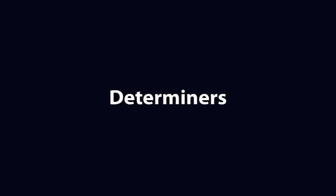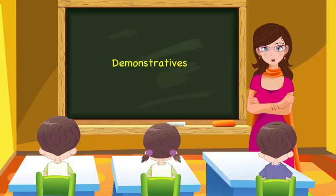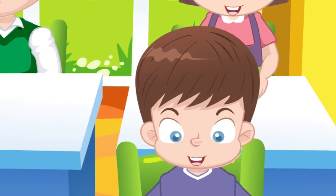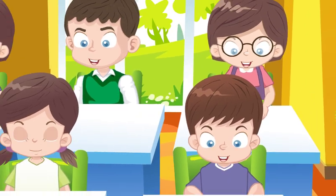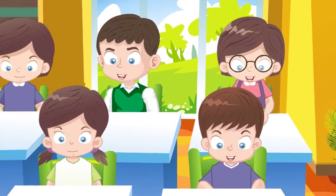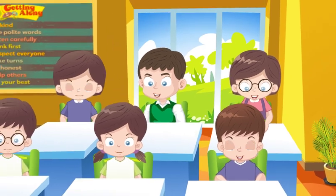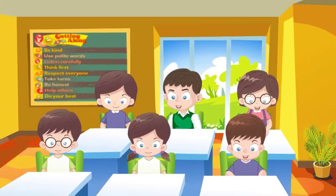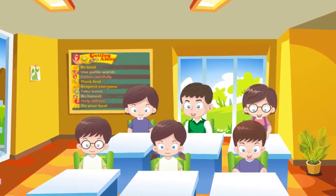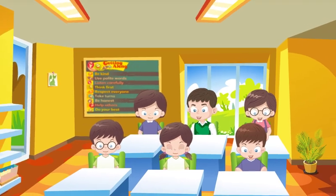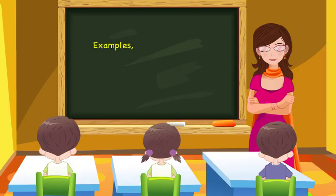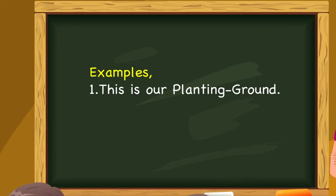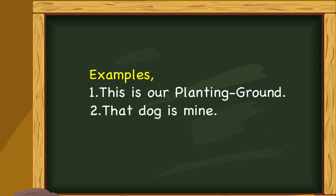Determiners. Demonstratives: 'this' and 'that' are used before singular countable nouns, while 'these' and 'those' are used before plural countable nouns. Examples: 'This is our planting ground.' 'That dog is mine.'